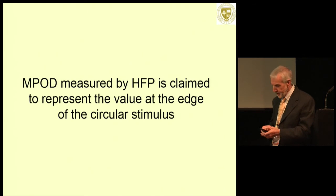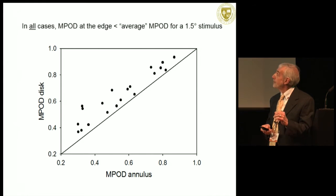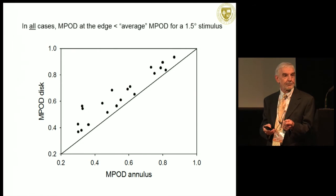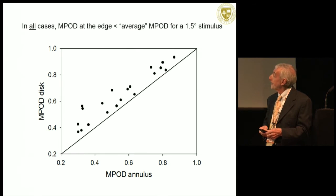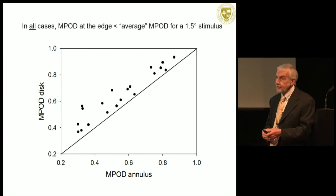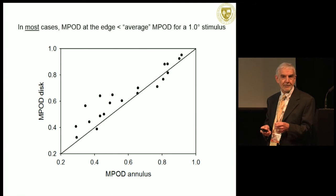I'm not a proponent of this hypothesis, based on research where we compared macular pigment optical density for a 1.5-degree disc stimulus with that measured using an annular stimulus of average diameter 1.5 degrees. For 10 subjects — left and right eyes, so 20 data points — all lie above the line of unit slope, whereas they should be clustered around it if the edge hypothesis were correct. When we repeat the experiment with a smaller 1-degree stimulus, most data points still lie above the line of unit slope, although one or two lie below.